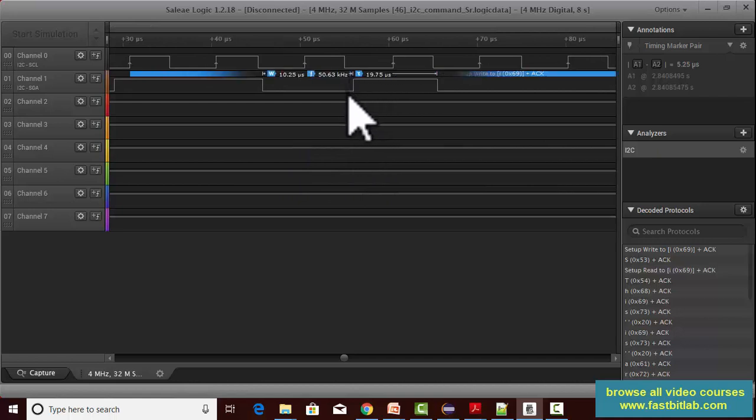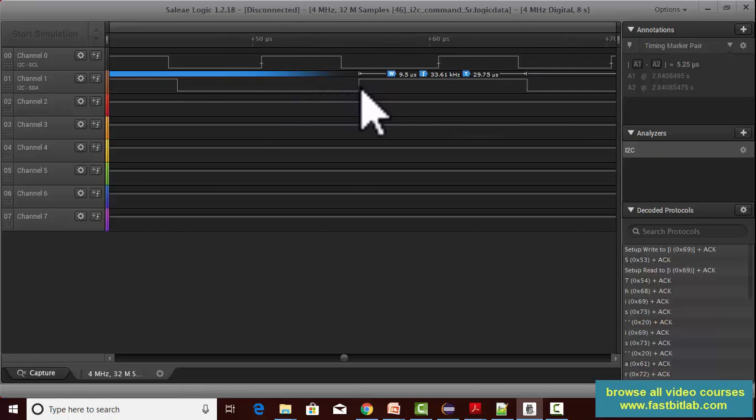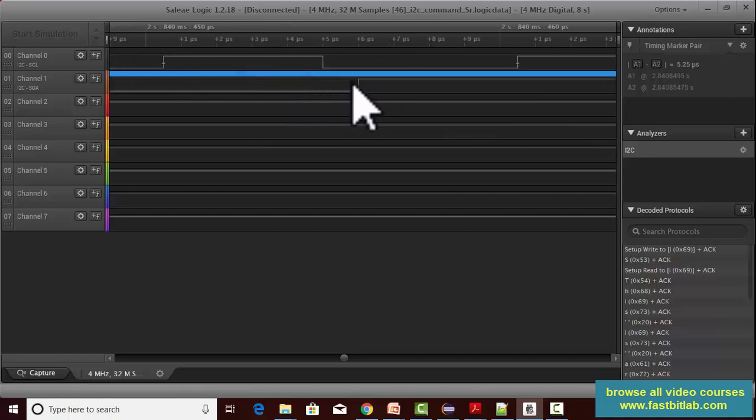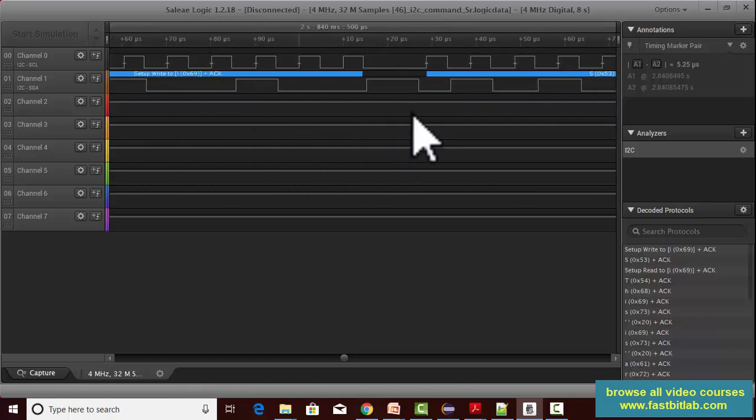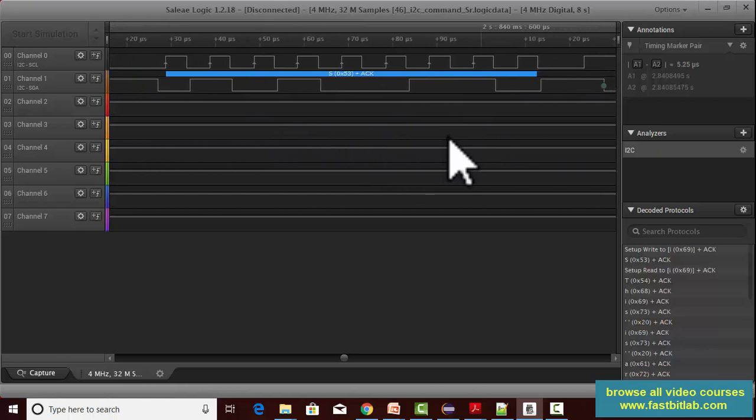This is a data transition from low to high, and when it's happening, it's happening only when the clock is low. You can see that nowhere in this trace is data changing when the clock is high.